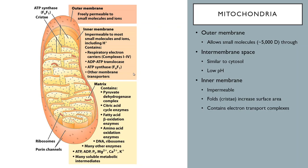Mitochondria don't always look like the prototypical textbook picture — they actually come in lots of different shapes and sizes depending on the cell type and species. Inside the inner membrane, you have a compartment called the matrix. The matrix is separated from the cytosol by the inner membrane, so it typically has a relatively high pH compared to the cytosol or the intermembrane space. It contains most of the enzymes needed for the citric acid cycle, including the pyruvate dehydrogenase complex, which converts pyruvate into acetyl-CoA. The enzymes for breaking down fatty acids and amino acids can also be found inside the matrix.